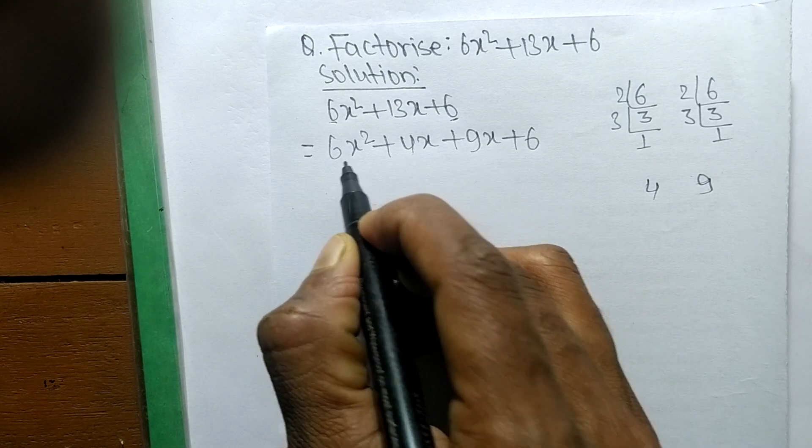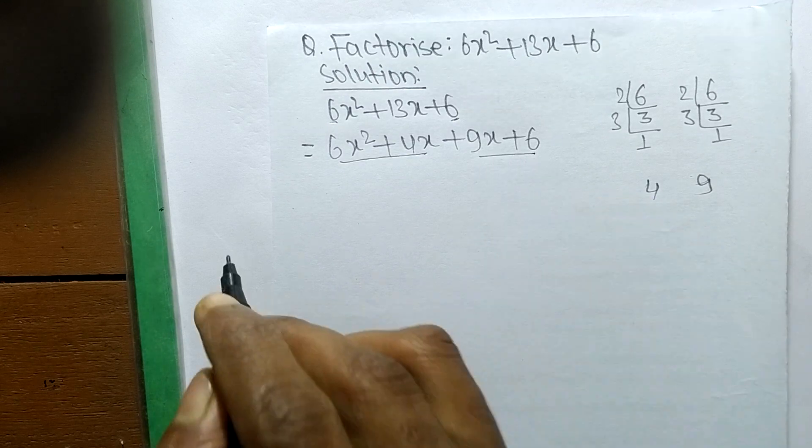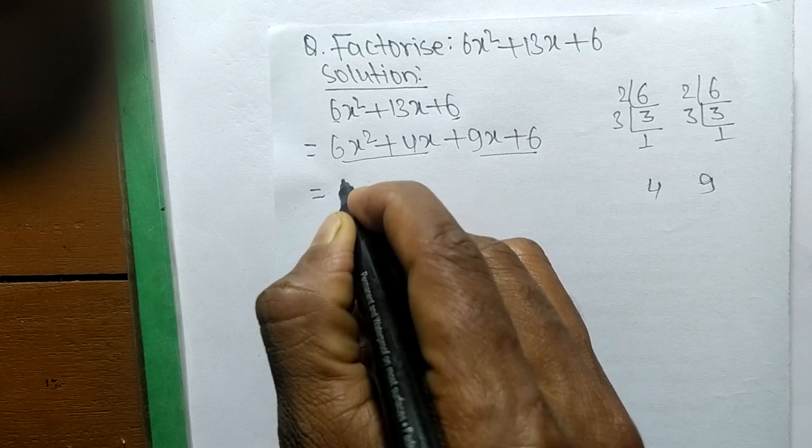So now we have to separate it into 2 pairs. These both are first pair, like as these both are second pair. In the first pair the common here is 2x.